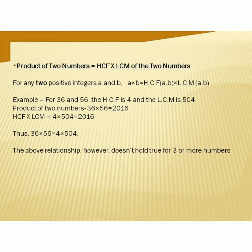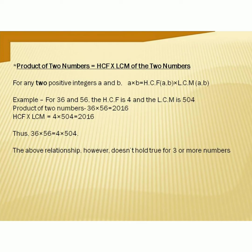Another important result: the product of two numbers equals the product of their HCF and LCM. This is applicable only for two numbers, not three or more. For any positive integers A and B: A × B = HCF(A, B) × LCM(A, B). For example, for 36 and 56, the HCF is 4 and LCM is 504. The product 36 × 56 = 2016, and HCF × LCM = 4 × 504 = 2016. This verifies the result.